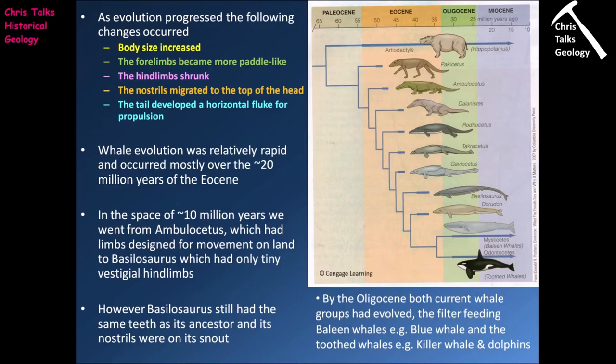All these changes are what you would expect in a shift to the marine environment. The forelimbs becoming more paddle-like allows the animal to steer more easily in water, while the shrinking hind limbs reduce drag — you don't really need them to help steer, so evolution gets rid of them, making them vestigial. The nostrils migrating to the top of the head makes sense: a whale doesn't have to stick its whole head out of the water to breathe, just poke its back out and use the blowhole. The horizontal fluke on the tail powers the whale through the water.